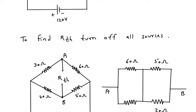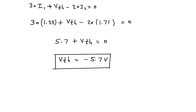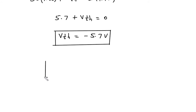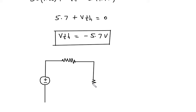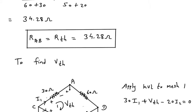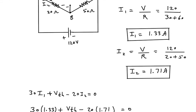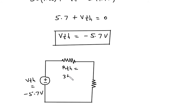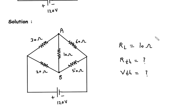From these values we can draw the Thevenin equivalent circuit, consisting of VTH, RTH, and RL. The value of VTH is minus 5.7 volt, the value of RTH is 34.28 ohm, and RL is 10 ohm.